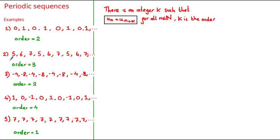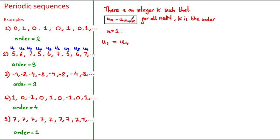So let's have a look at an example. Let's go back to the 5, 6, 7 sequence and mark the terms as u sub 1, u sub 2, u sub 3, and so on. Using this relationship, let's look at when n is equal to 1. Substituting n equals 1, we get that u sub 1 is equal to u sub n plus k. Now n is equal to 1 and k is the order, which we have already determined to be equal to 3, and therefore u sub n plus k would be equal to u sub 4. Looking at the terms in the sequence, we can see that u sub 1 and u sub 4 are both equal to 5, and therefore this satisfies our definition.